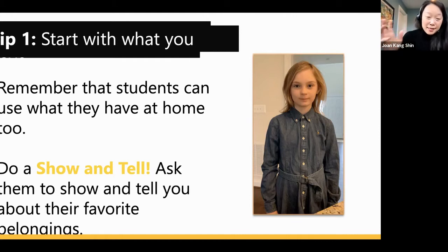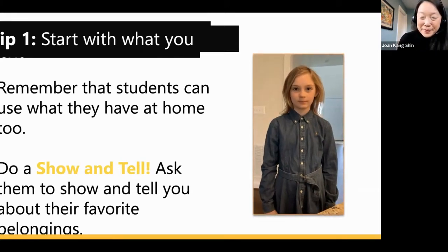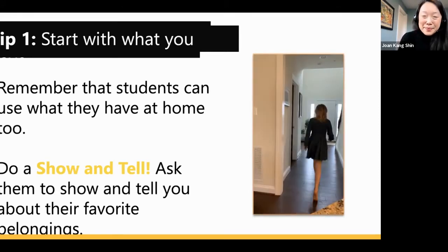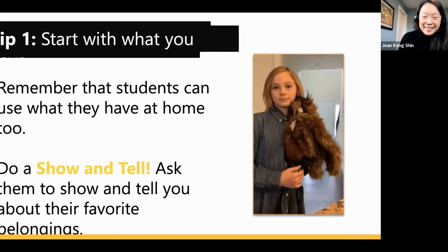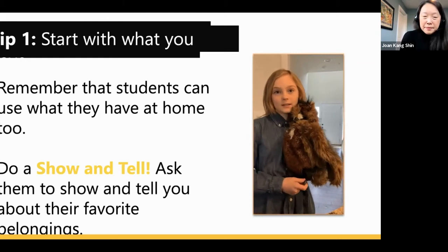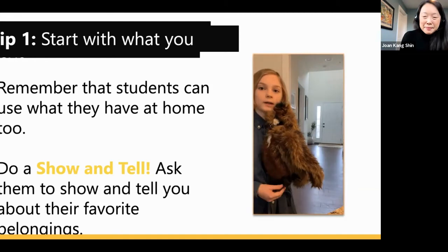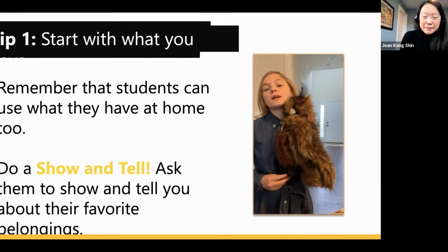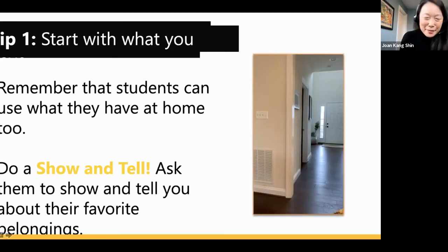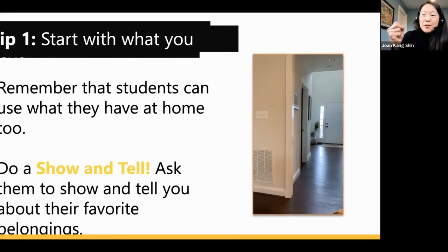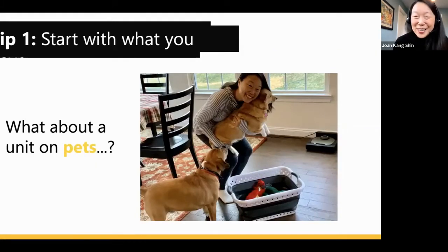Remember that students can use what they have at home too. Ask them to show and tell about their favorite belongings. For example, go to your room, grab your favorite toy. Here's my daughter Ilsa presenting her barn owl Snowy Bell, sharing facts like how barn owls can turn their heads 360 degrees and have sharp talons. You can also ask students to bring one fruit or one vegetable related to a food unit.